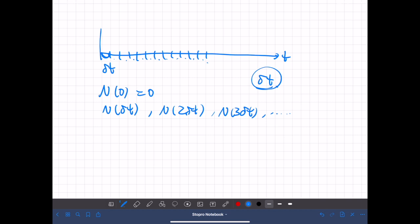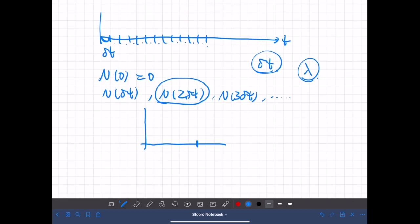And of course, we have to specify the value of lambda. And given that, how can we specify whether this random variable increases by 1 or not? It can be determined like this.